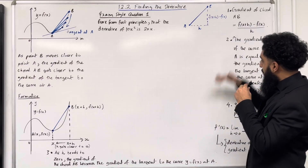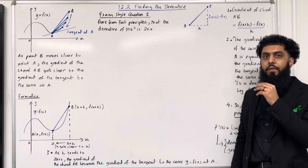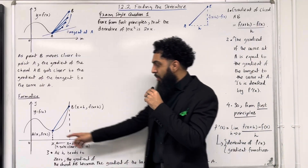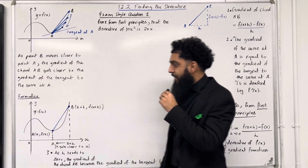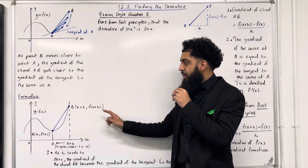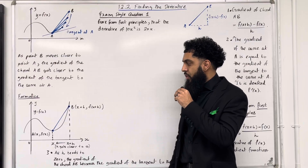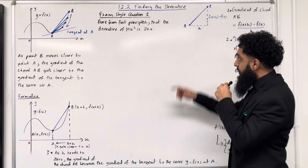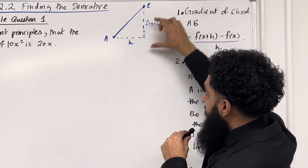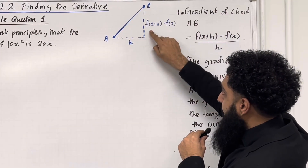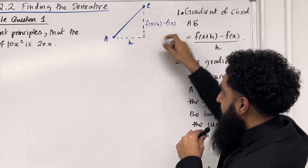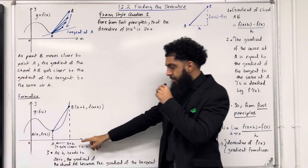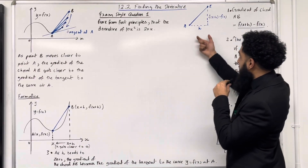Now I'm going to go through the procedure of differentiation from first principles. Suppose the point A has coordinates x, f of x, and the point B has coordinates x plus h, f of x plus h. Let's have a look at the gradient of the chord AB. The change in y is f of x plus h minus f of x. The change in x is x plus h minus x, which is basically h.